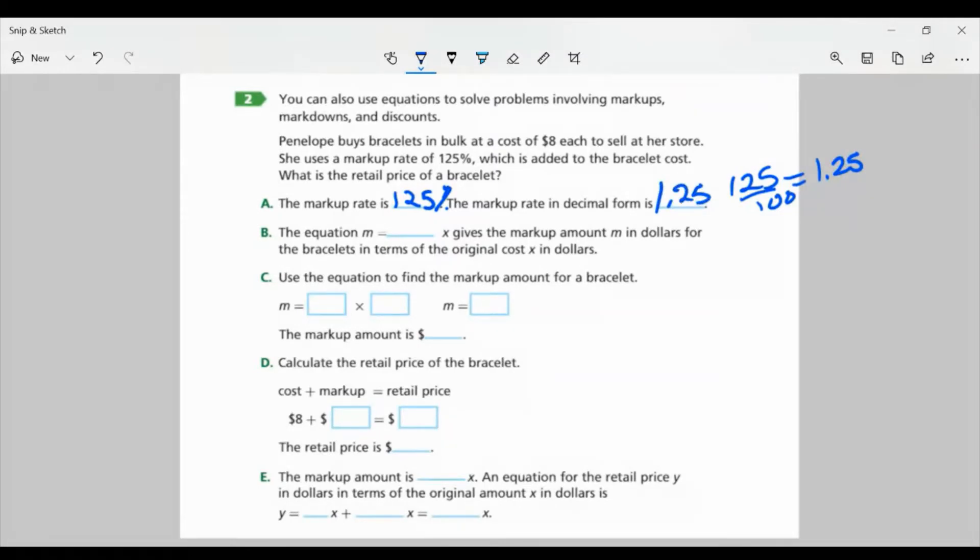So part A, the markup rate is 125%. The markup rate in decimal form would be 125 divided by 100, which is 1.25. Now for part B, the equation M equals 1.25X gives the markup amount M in dollars for the bracelets in terms of the original cost X in dollars.